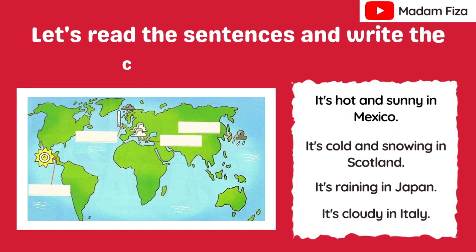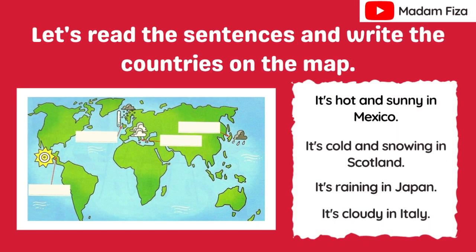Okay, now let's read the sentences and write the countries on the map. Overall, we have four sentences. We will read the sentence one by one and figure out where the countries are on the map.